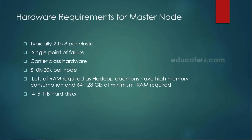Hardware requirements for master node — that means our name node. The master machines are either 2 to 3 per cluster. If you are setting up a high availability cluster, instead of a single name node you will be purchasing another machine called a standby name node. If you are using HBase, you can have an HMaster as well. That is the reason why you can have 2 to 3 master nodes per cluster, and these master machines have to be carrier class hardware machines.